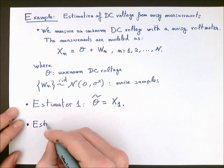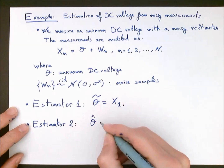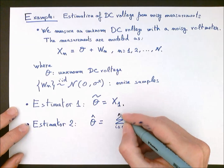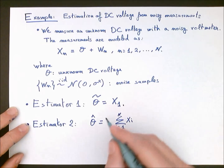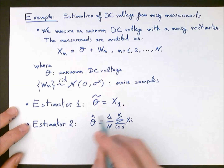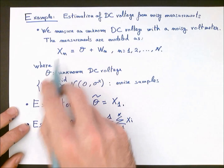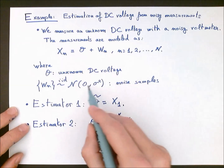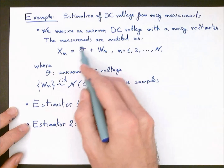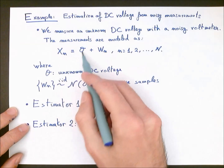The second estimator is one you have already worked with in this course. We add up all the measurements from 1 to N and divide by the number of them. This is the sample mean estimator, and it simply estimates the mean of the measurements X. Since we know that the noise has zero mean, the measurements will also have a mean equal to z, and therefore by applying the sample mean we expect to obtain an accurate estimate of the DC voltage z.